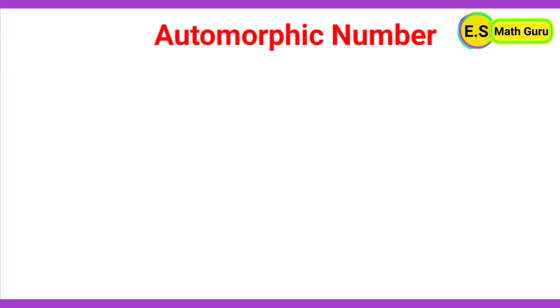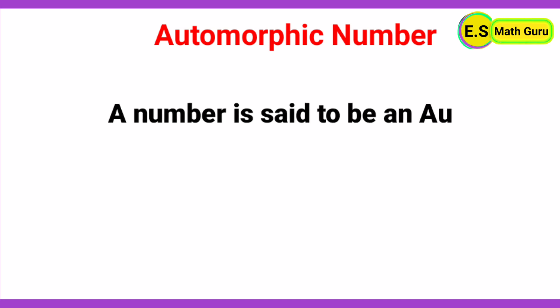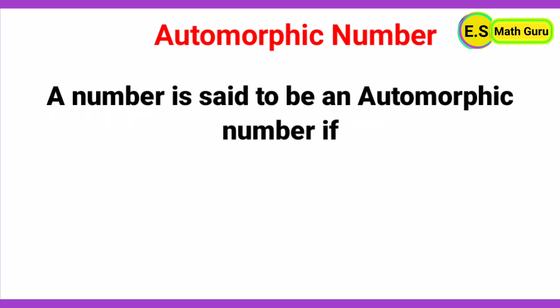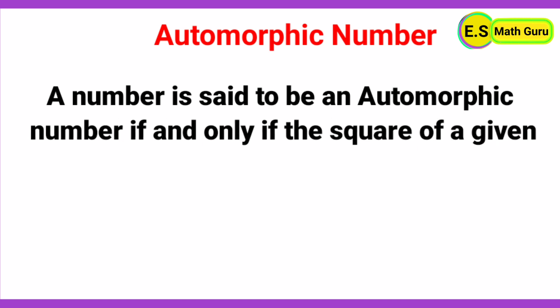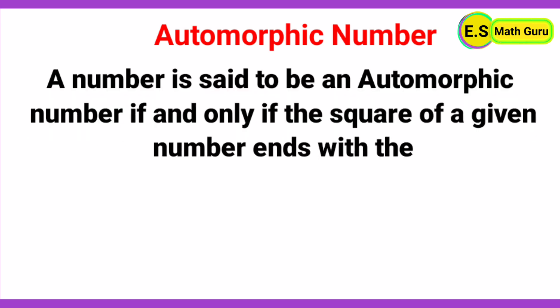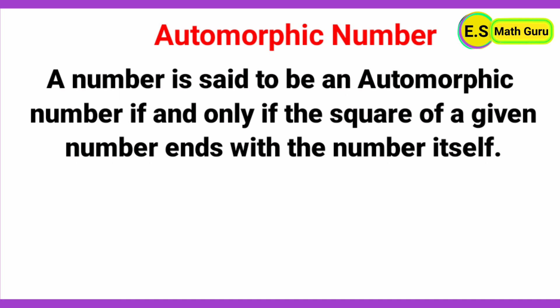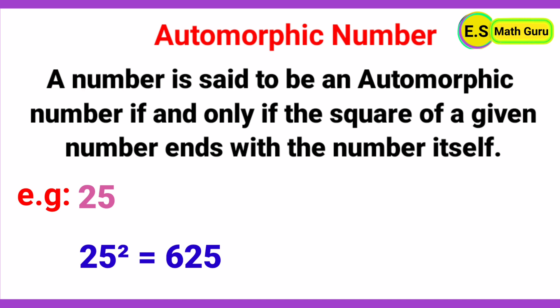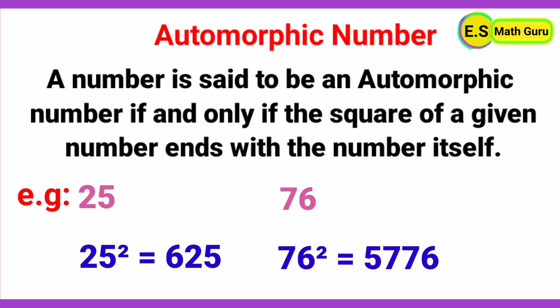Next, automorphic number. A number is said to be an automorphic number if and only if the square of a given number ends with the number itself. For example, 25: the square of 25 is 625, which ends with 25. Next, 76: the square of 76 is 5776, which ends with 76.